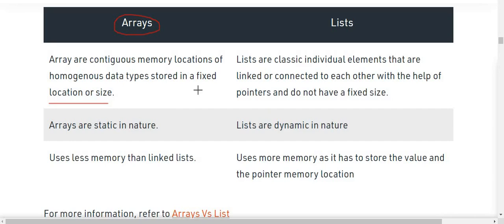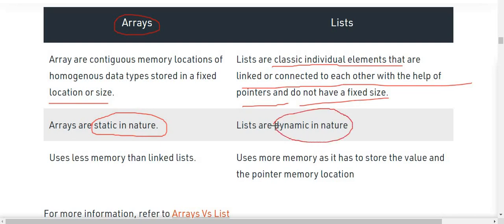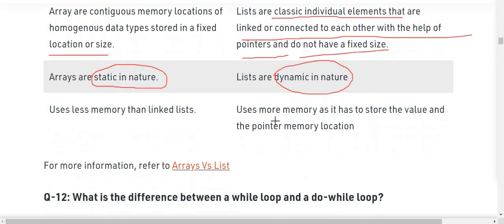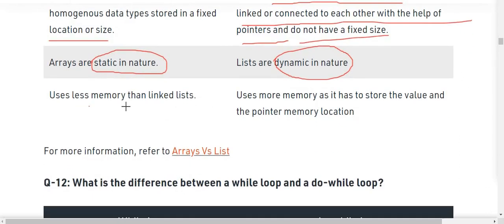On the other hand, lists are classic individual elements that are linked or connected to each other with the help of pointers and they do not have fixed size and are also not contiguous inside the memory. Arrays are static in nature while lists are dynamic in nature - they can be anywhere inside the memory. Arrays use less memory than linked lists. Linked lists use more memory as they have to store the value and the pointer of the memory location of the next node. These are some basic definitions of arrays and lists and their differences.